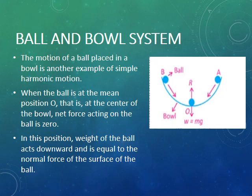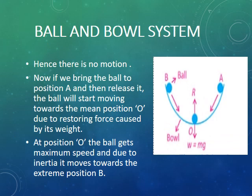Now if we bring the ball to position A and then release it, the ball will start moving towards the mean position O. That is due to the restoring force that is produced by its weight. At position O, the ball gets maximum speed. Due to inertia, it moves towards the other side and then moves towards the extreme position B.